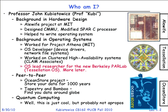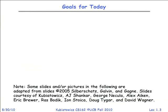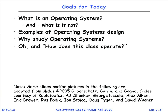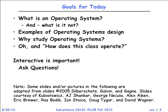Our goals for today: what are the goals for a first lecture? Here's the topic. Here I am. Here's how the course works. Today we're going to start by talking about what's an operating system and what is it not. We'll give some examples of operating systems design. We'll talk a little bit about why studying operating systems is a good idea. And interactivity is important, so feel free to ask me questions.